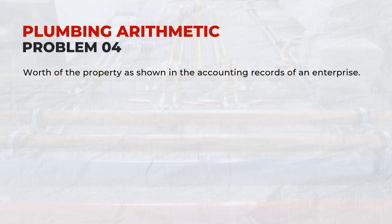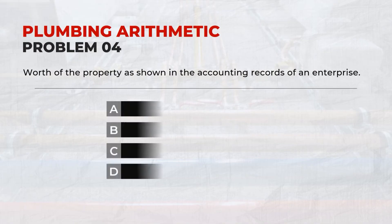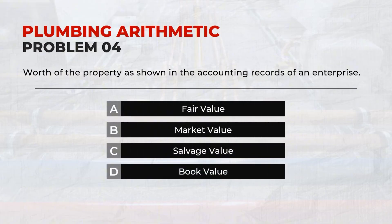The worth of the property as shown in the accounting records of an enterprise is: D. Book Value.